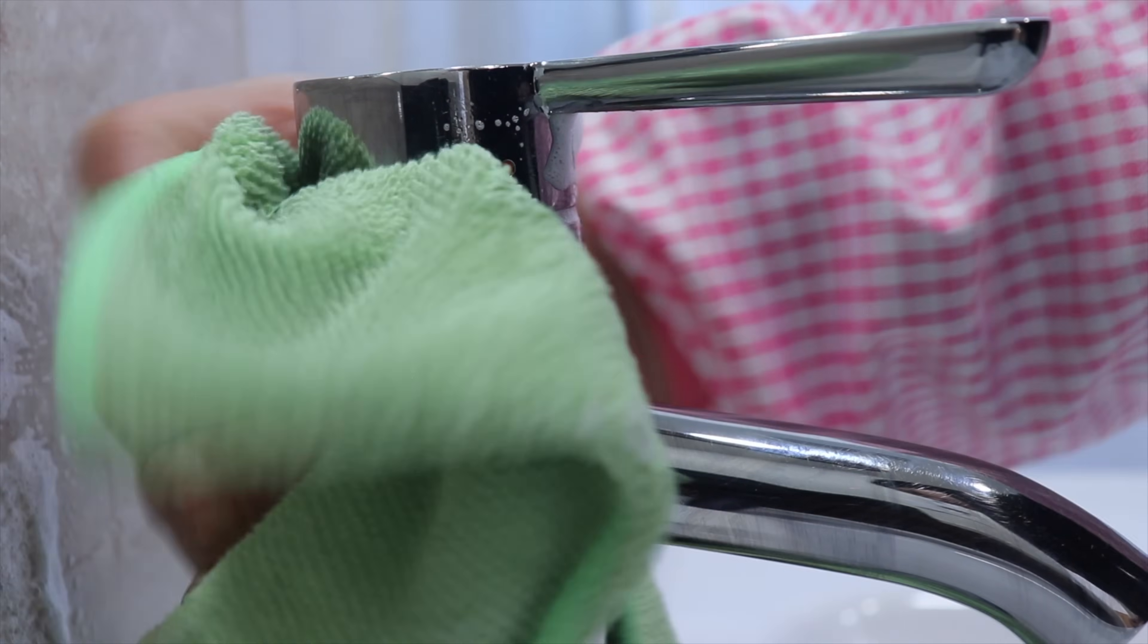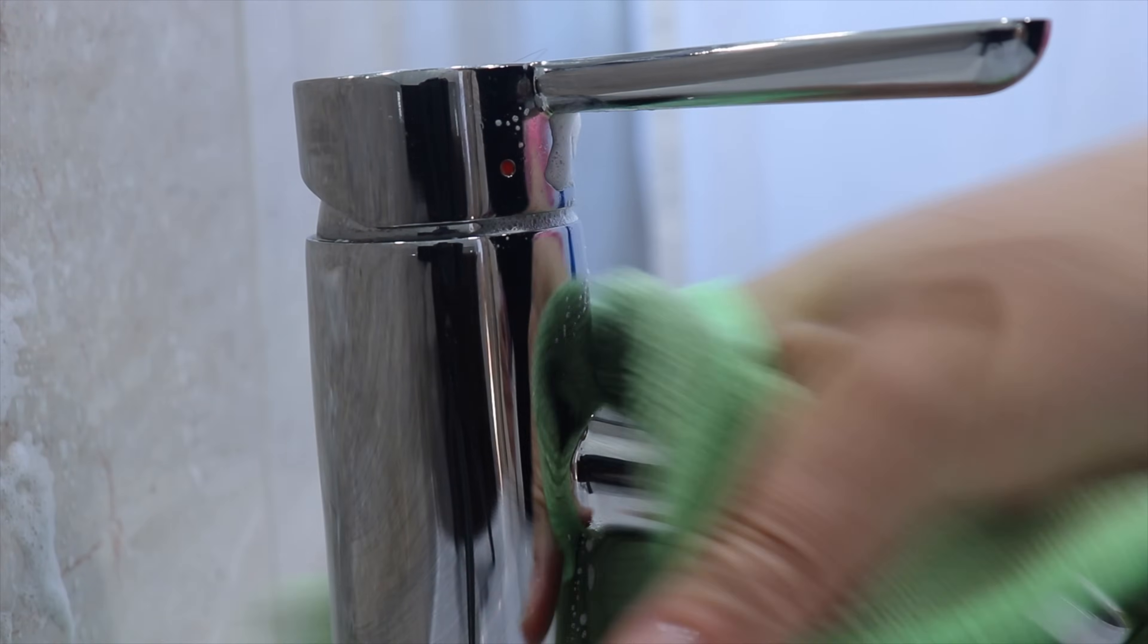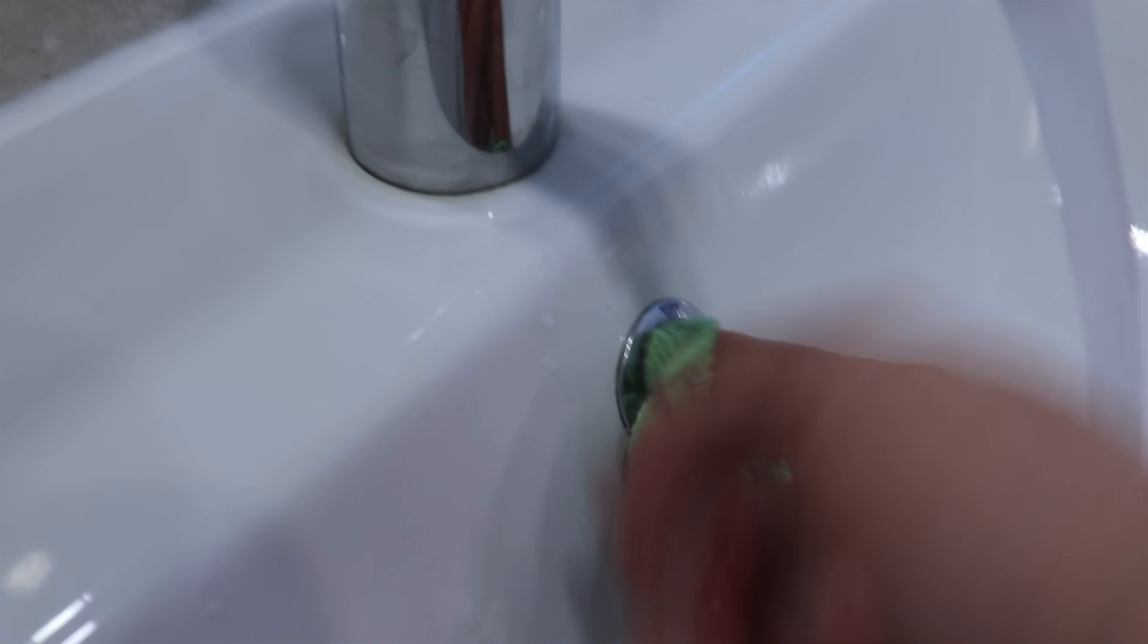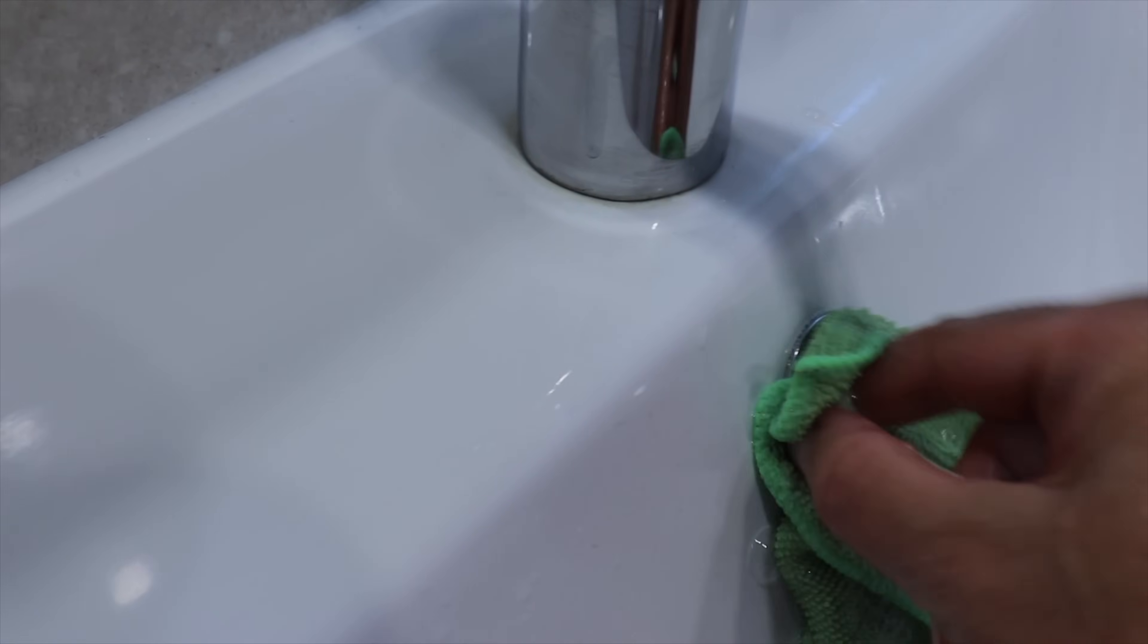Because I do not want to cross contaminate my food tools with my toilet tools, I color code them. Green will be used for bathrooms and other messy cleanups, but will never be used on food surfaces. This way, my red and blue microfiber cloth and sponges will be only used with food surfaces.